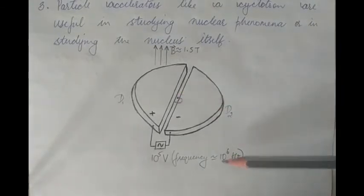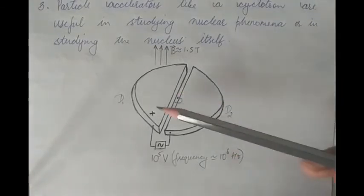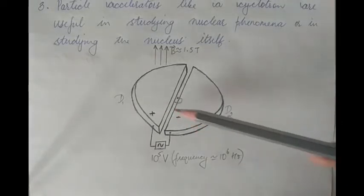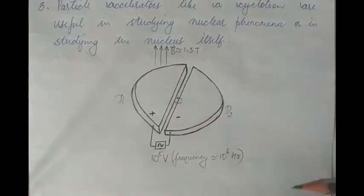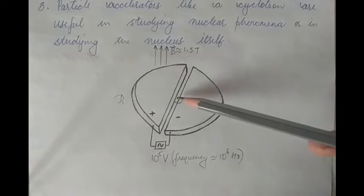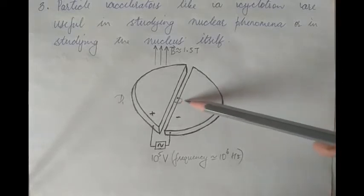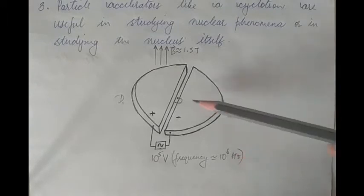Initially, the charged particle is in between the two D's. At this instant, say D1 is positive and D2 is negative, so there is an electric field set up between D1 and D2. Due to this electric field, the positive charged particle experiences a force and is pushed into D2, entering D2 with a certain velocity.